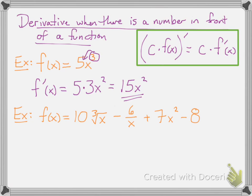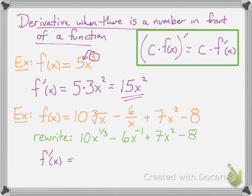Now let's take a look at a much more complicated example: 10 times cube root of x, minus 6 over x, plus 7x squared minus 8. Whenever you see roots or fractions, you need to rewrite using algebra. Cube root is the same as x to the 1-third power. 6 over x is the same as 6x to the negative 1 power. 7x squared minus 8 stays the same. Taking the derivative: bring the 1-third down in front and multiply by 10, giving 10-thirds x to the negative 2-thirds. For minus 6x to the negative 1, bring that negative 1 down in front — it becomes positive 6 — then subtract 1 from the exponent, giving x to the minus 2.